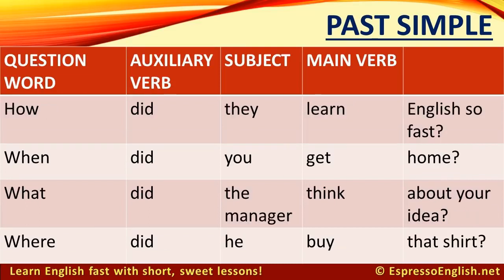The formula also works in the past simple, where the auxiliary verb is 'did.' For example: How did they learn English so fast? When did you get home? What did the manager think about your idea? Where did he buy that shirt?